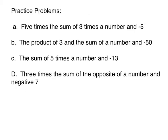Practice problems a says five times the sum of three times a number and negative five. When you see the word sum you know that means to add, this means times. So let's do this: five times, five times the sum of what. If we're going to add something and then we're going to multiply it by five, I'm going to put it in parentheses. The sum of three times a number. If I'm going to have a sum, I'm going to add plus negative five.